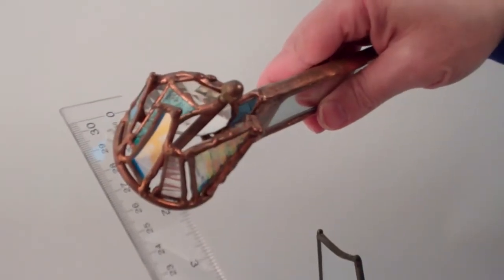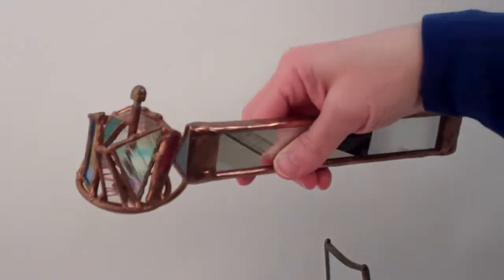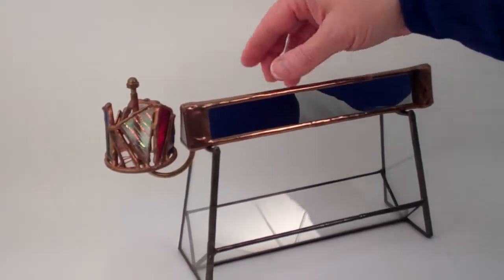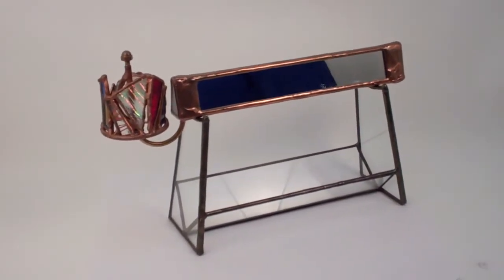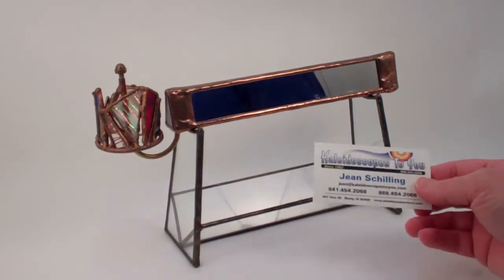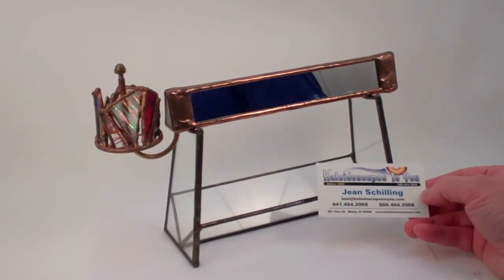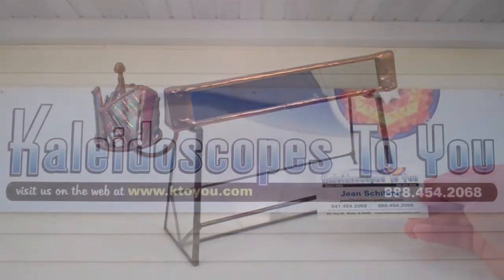Diameter of the kevil is approximately two and a quarter inches. This is a vintage Wins Eye kaleidoscope from 1986, and this kaleidoscope is currently available at kaleidoscopestou.com.